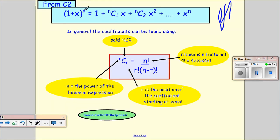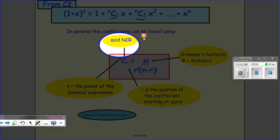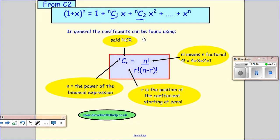So if we had 1 plus x to the power of 7, we would go up to x to the power of 7 and we'd be able to find our coefficients using this nCr thing, and you could put that in the calculator and get the various coefficients out.